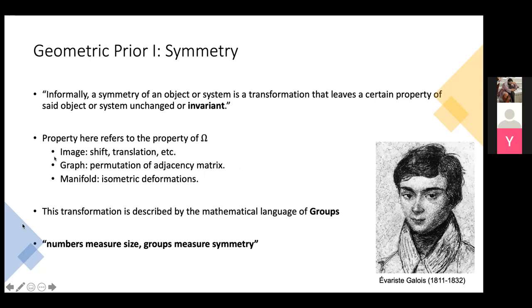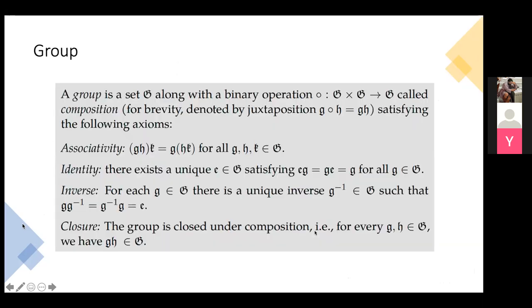For manifolds, the concept is isometry — if you have a continuous deformation, you want the Riemannian metric to stay the same. The mathematical language we use to describe symmetry is called a group. As the saying goes: numbers measure size, groups measure symmetry. Group theory was proposed by Galois in the early 19th century. The formal definition of a group is a binary operator dealing with composition, satisfying the group axioms: associativity, identity, inverse, and closure.